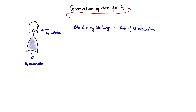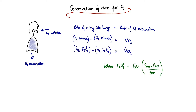Next we look at conservation of mass for oxygen. At steady state, the rate of oxygen uptake into the lungs is equal to the rate of oxygen consumption by the body. The rate of oxygen entry is the difference between the rate of oxygen being inhaled and the rate being exhaled, equal to V dot O2, the rate of O2 consumption. An important caveat: gas inhaled from the atmosphere is not humidified, but as it's inhaled in the upper airways it becomes fully humidified, requiring a correction factor that accounts for the addition of water vapour.